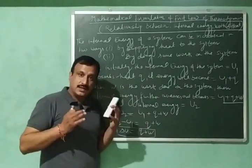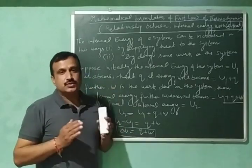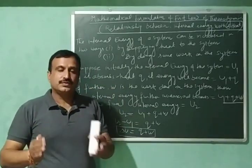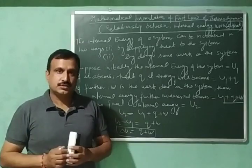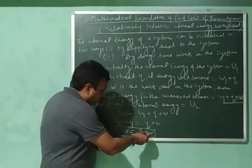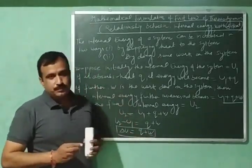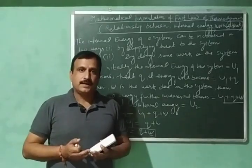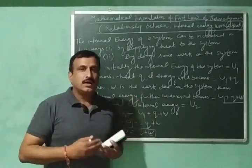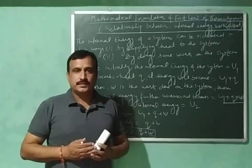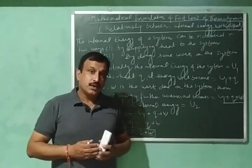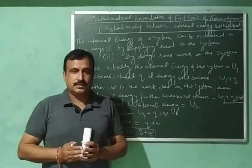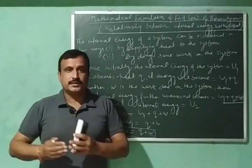This equation is called the mathematical formulation of the first law of thermodynamics. Here, W includes all types of works — it can be gravitational work, it can be electric work. Now, what if we consider only PV work, that is pressure-volume work?